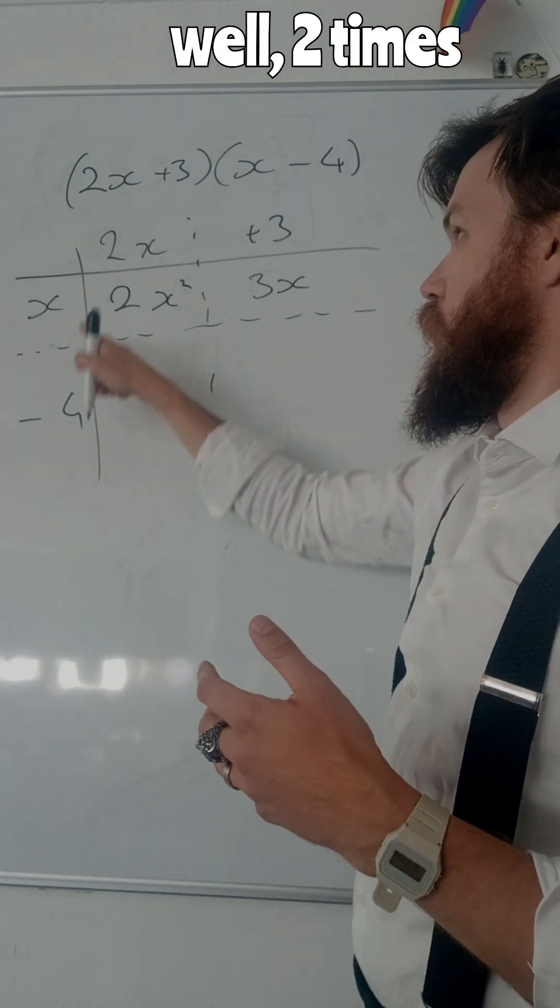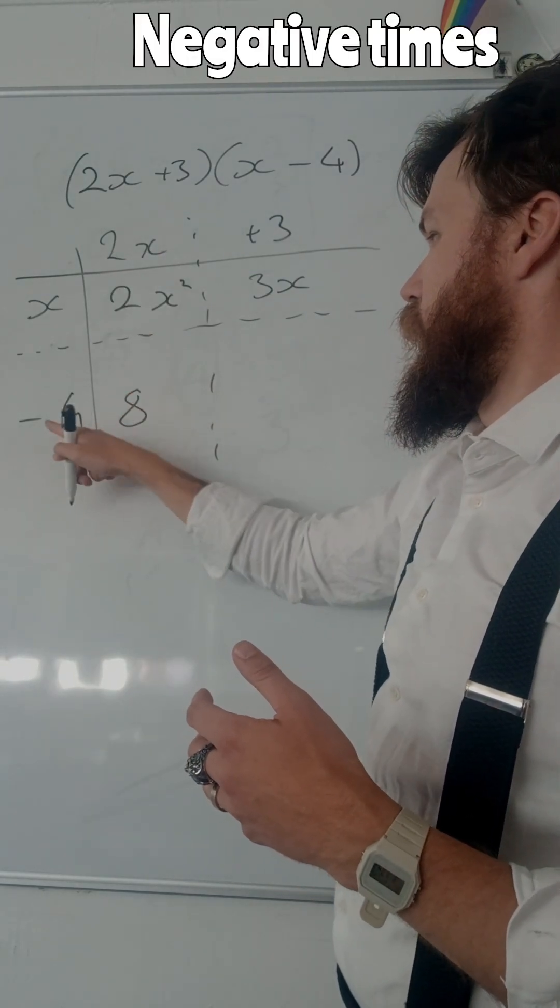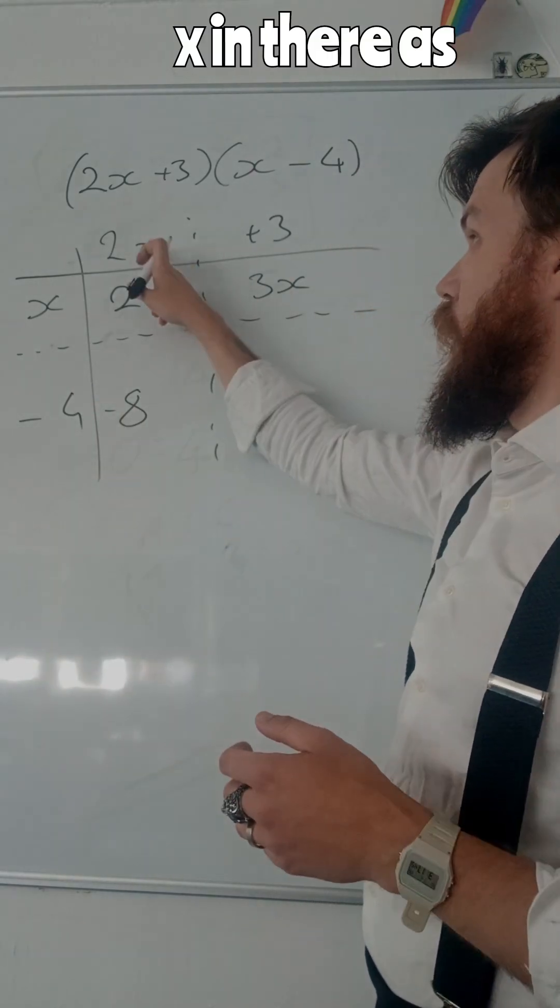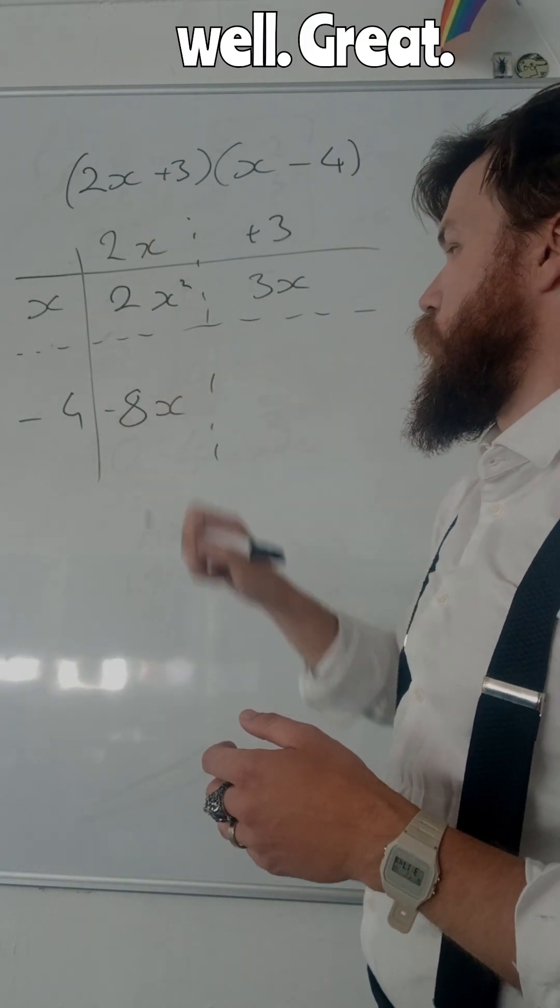2x times negative 4, 2 times 4 is 8. Negative times a positive gives me a negative. And then I've got x in there as well.